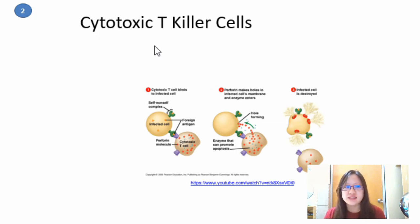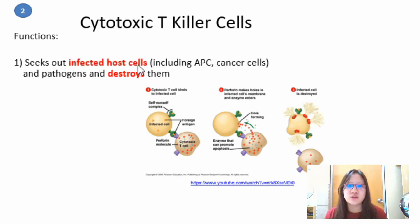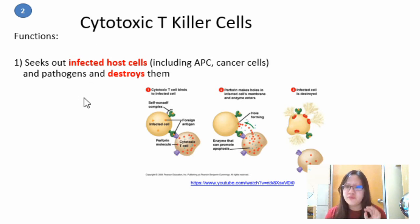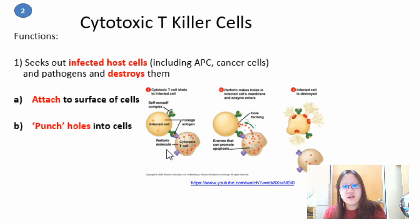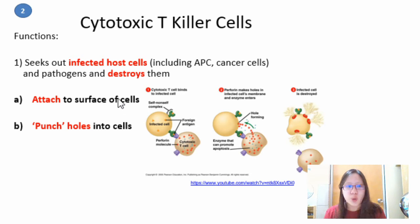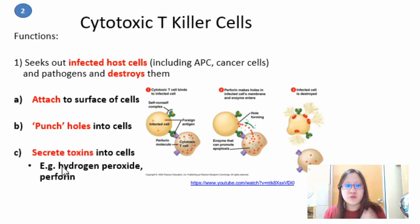Cytotoxic T killer cells seek out infected host cells, including antigen-presenting cells and cancer cells. They attach to the surface of target cells using receptors to detect whether the cell is foreign, then punch holes into the cells and secrete toxins into them — sort of like throwing a grenade.